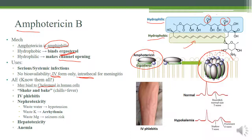Adverse effects include 'shake and bake' — fever and chills during infusion — and IV phlebitis causing venous inflammation. Nephrotoxicity is significant: it causes water wasting leading to hypotension, potassium wasting causing arrhythmia, and magnesium wasting causing seizure risk. It can also be hepatotoxic, as its hydrophobic group is difficult for the liver to excrete. Finally, it can cause anemia by binding cholesterol in red blood cell membranes.